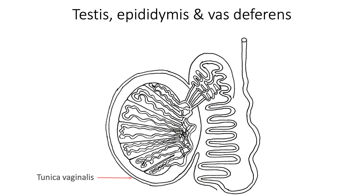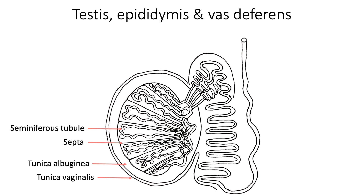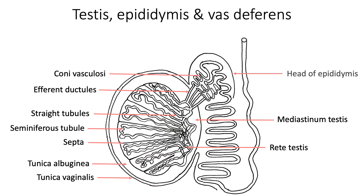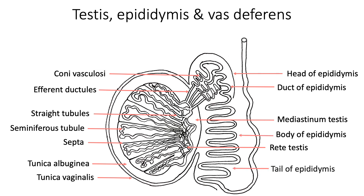Inside the tunica vaginalis, the testis has a thick fibrous covering called the tunica albuginea, which sends septa inward to divide the gland into 200 to 250 lobules. Each lobule consists of 1 to 4 seminiferous tubules. The two ends of each seminiferous tubule continue posteriorly as straight tubules, which anastomose in the posterior mediastinum testis to form the rete testis. From the superior end of the mediastinum testis, 8 to 12 efferent ductules exit, becoming coiled into conical-shaped coni vasculosi occupying the head of the epididymis. These efferent ductules open into a highly coiled duct of the epididymis, which forms the body and tail of the epididymis. Distally, this duct continues as the vas deferens.